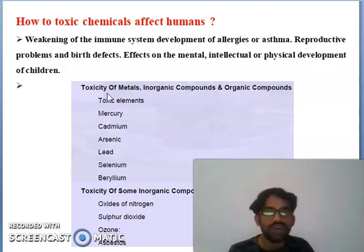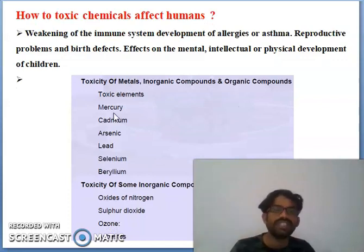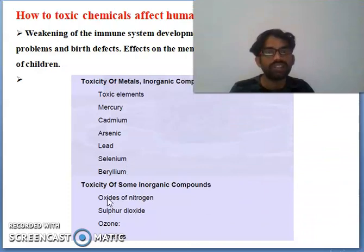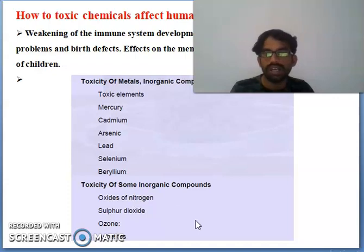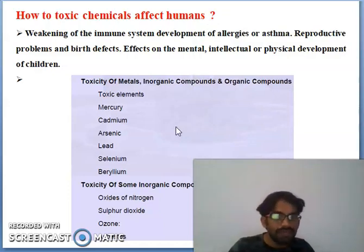What are the toxic metals — inorganic and organic? Toxic metals are very harmful: mercury, cadmium, arsenic, lead, selenium, and beryllium. There are also toxic inorganic compounds such as oxides of nitrogen, sulfur dioxide, ozone, and asbestos. Be aware of these toxic elements — they should not enter our body above certain levels.